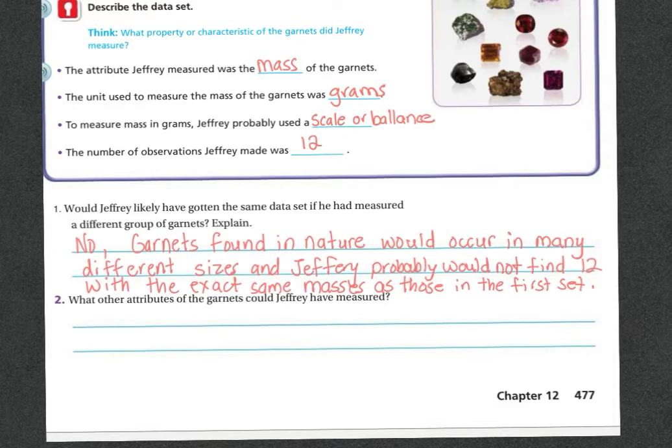Would Jeffrey likely have gotten the same data set if he had measured a different group of garnets? Explain. The answer is no. Garnets found in nature would occur in many different sizes and shapes. So Jeffrey probably would not find 12 with the exact same masses as those in the first set. It'd be really hard to match up.